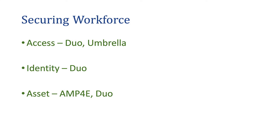Are we talking about securing the access, securing their identity, or protecting their assets as well? The answer is everything. When we're talking about securing the workforce, that should include everything: how they're accessing stuff, making sure their identity is safe, making sure the applications they're accessing are safe, and also that the devices they're using are not compromised. Today we're going to be looking at Duo and see how it's going to protect the identity and access of the users.